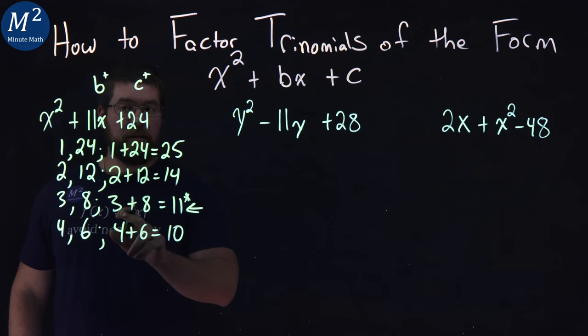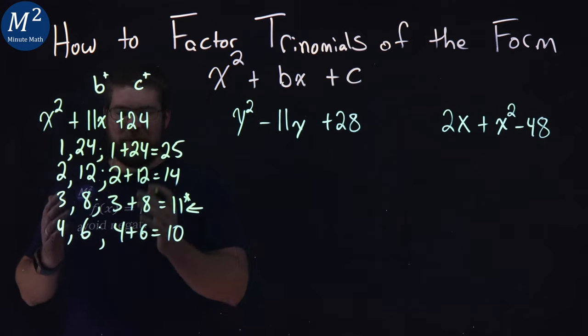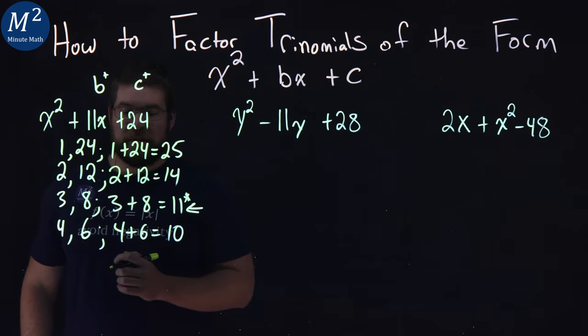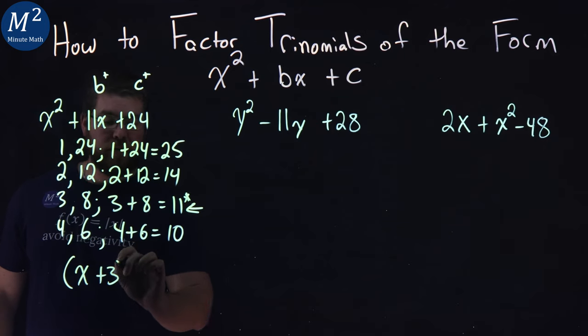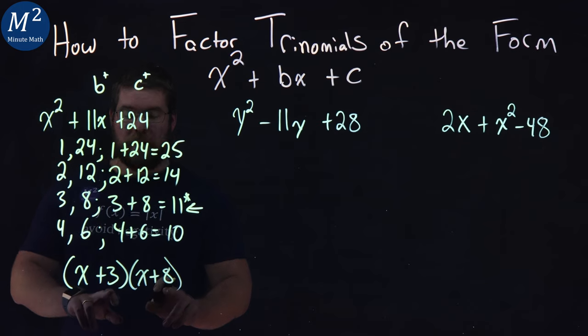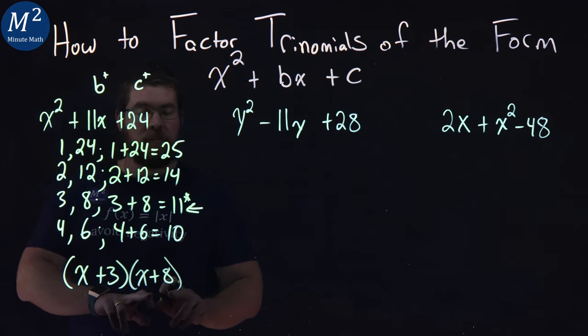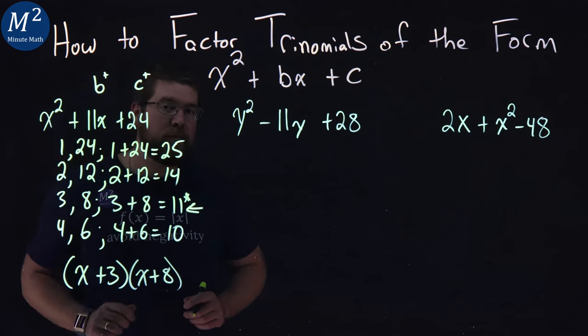So that means our factors here are 3 and 8, or not factors, that are how we factor the problem here. So 3 and 8 are our two numbers that we're looking for. And so we have x plus 3 and x plus 8. And that's how we input them here. x plus 3, x plus 8 is the factored form of x squared plus 11x plus 24.